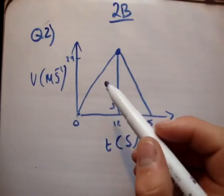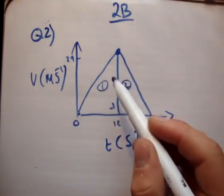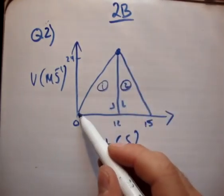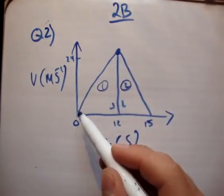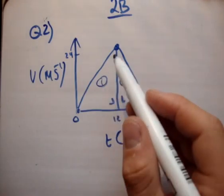So what's the distance? Well, the distance covered is the area underneath the curve. This is something I introduced in exercise 2A. So that's a triangle.